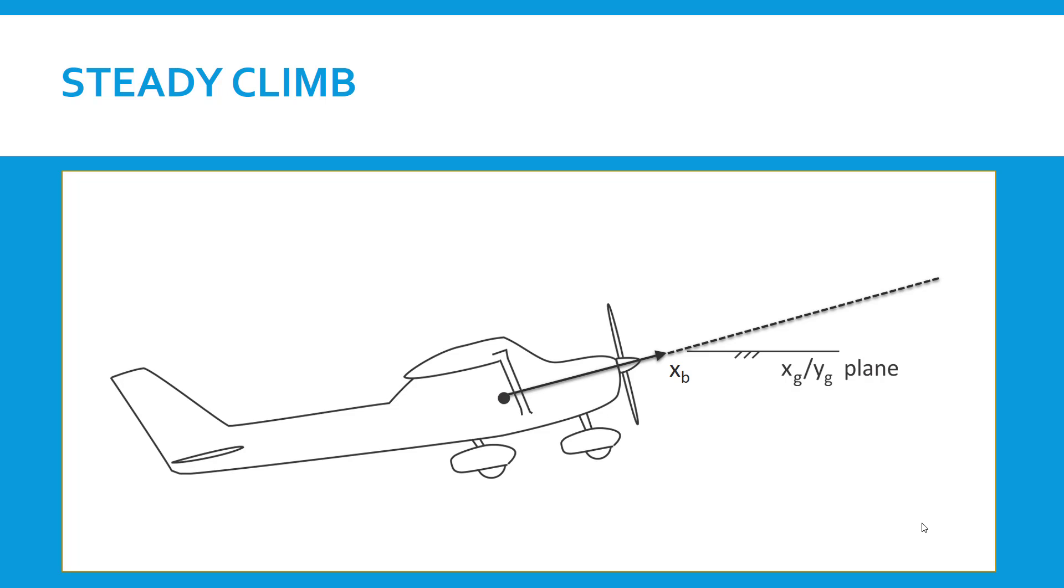What's important is that the airplane is climbing and we designate this angle gamma—the angle between the body-fixed longitudinal axis of the airplane XB and a horizontal plane. This is called the pitch angle. It has some other names. It's also called the flight path angle.